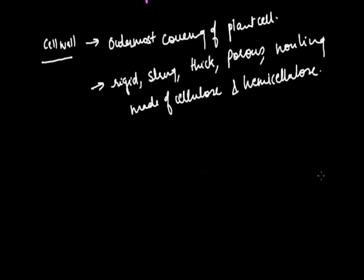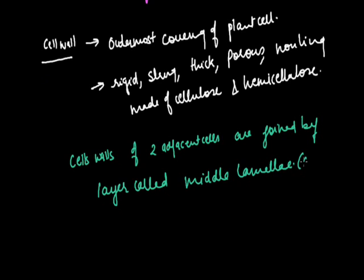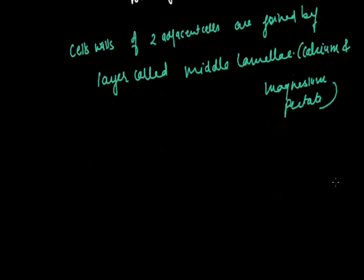The cell walls of two adjacent cells are joined by a layer called the middle lamella, which is made up of calcium and magnesium pectate. This was all about the structure and texture of the cell wall.